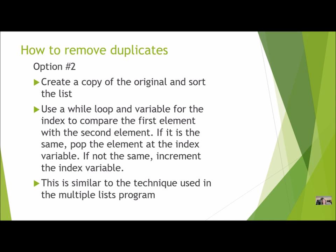Either of these options would require just a slight change from how you've done it in earlier programs. Option one uses a counters list; option two uses a while loop to go through. Both are great ways to do it, and maybe you come up with your own way. If so, make sure that you keep your way to yourself, because if I start seeing a third or fourth way — which is great, I love to see creativity — I want everybody to have their own way of doing it. I'll only give full credit to the first person who comes up with an original way of doing it. If they choose to share it with other people, those others do not get the same full credit.